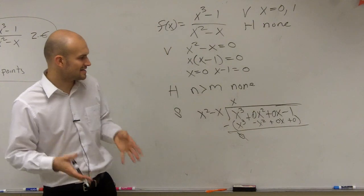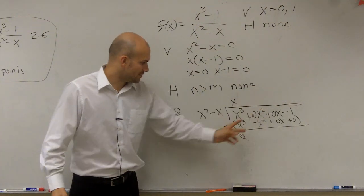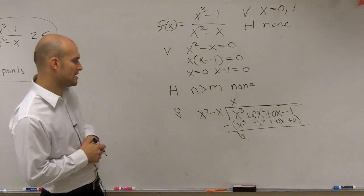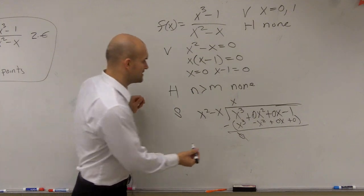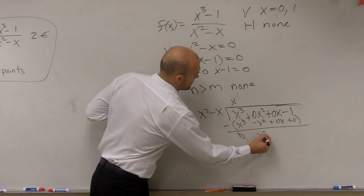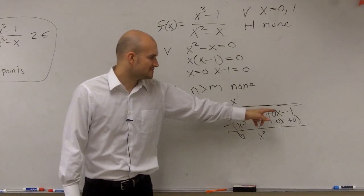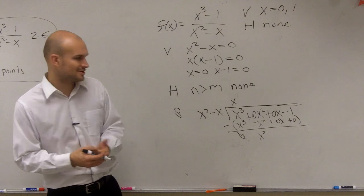x cubed minus x cubed is 0x cubed. It goes to 0, right? 0x squared minus a negative x squared now gives you a positive x squared, because that's a 0, right? And then we have 0x minus 0x. That's obviously going to go to 0. And then negative 1 minus 0 would give you negative 1.